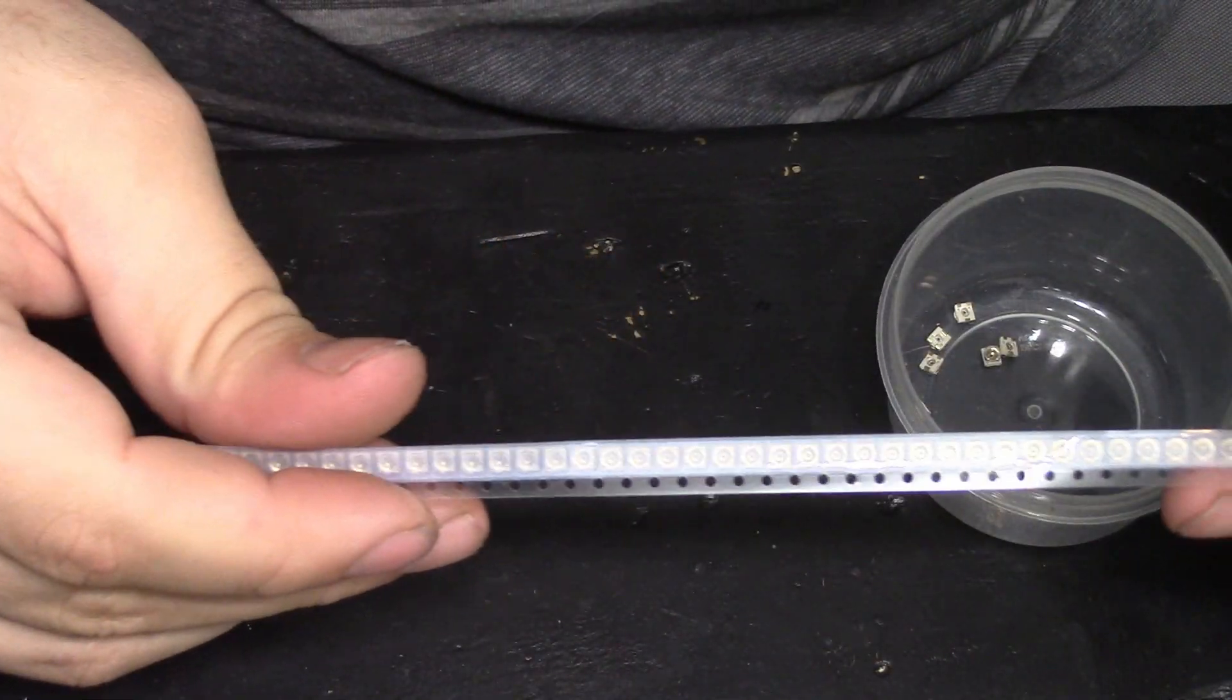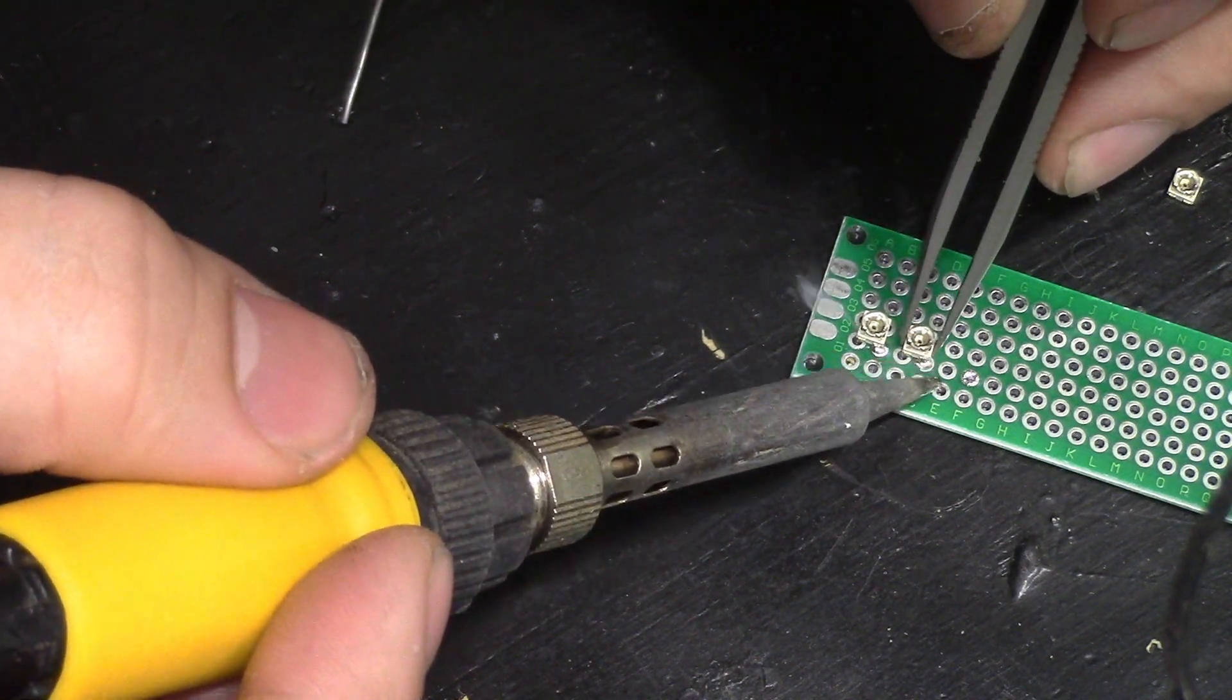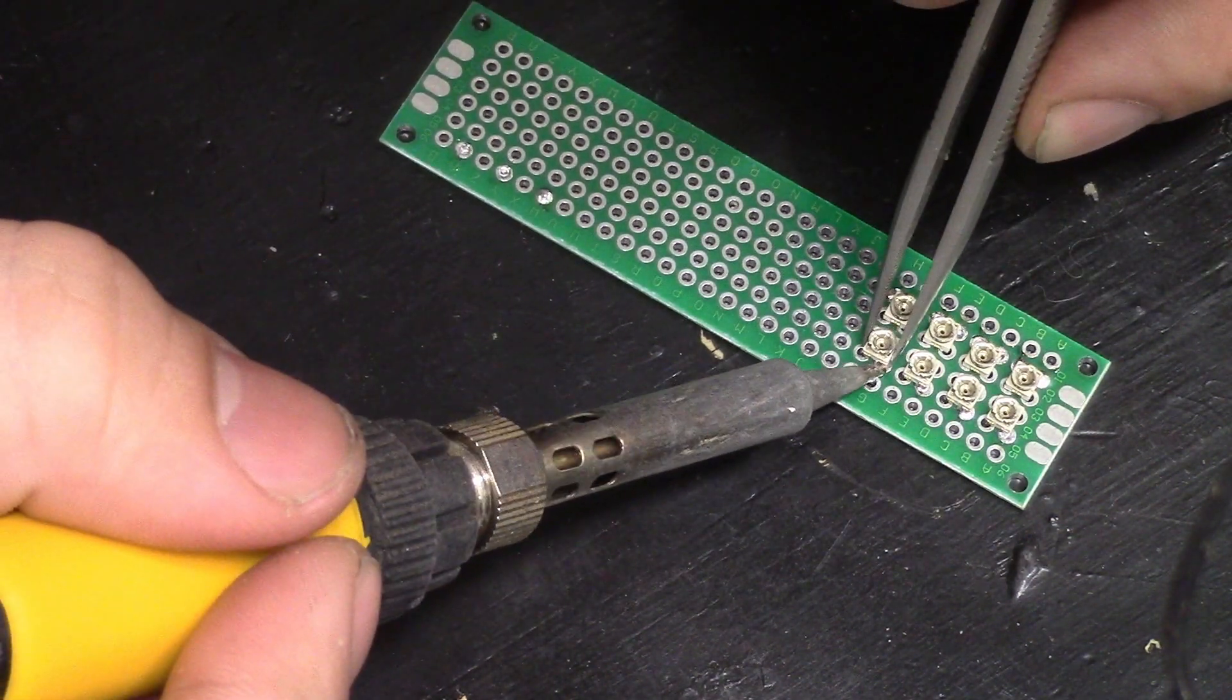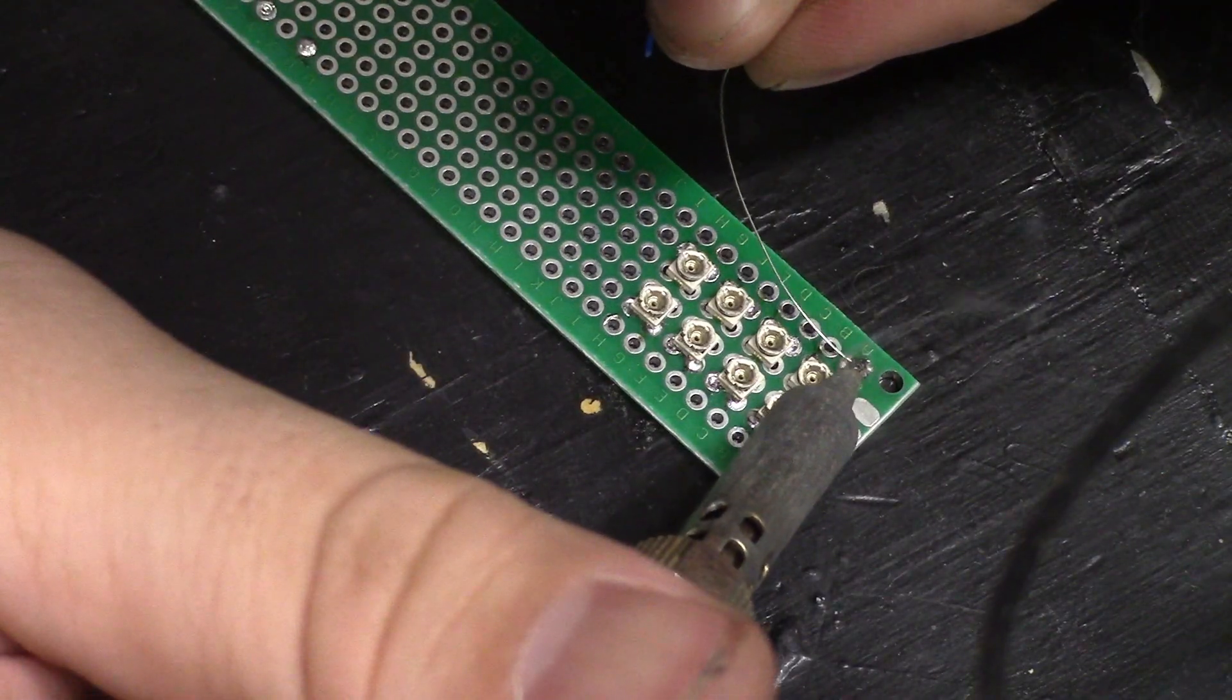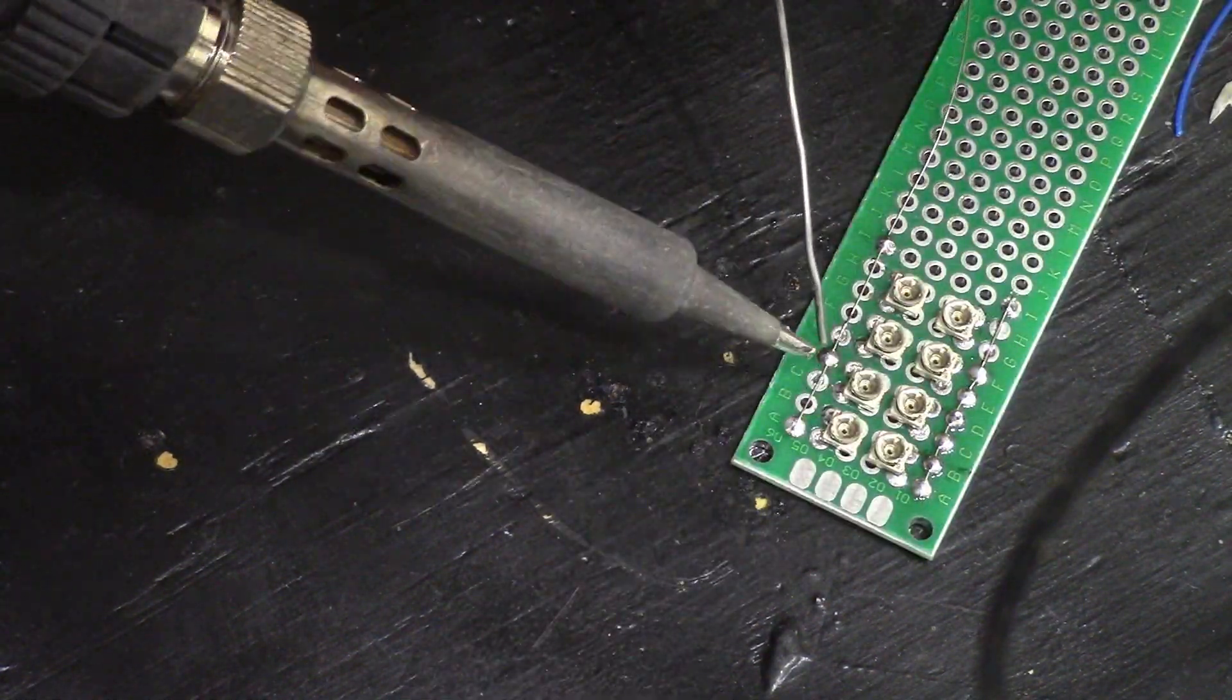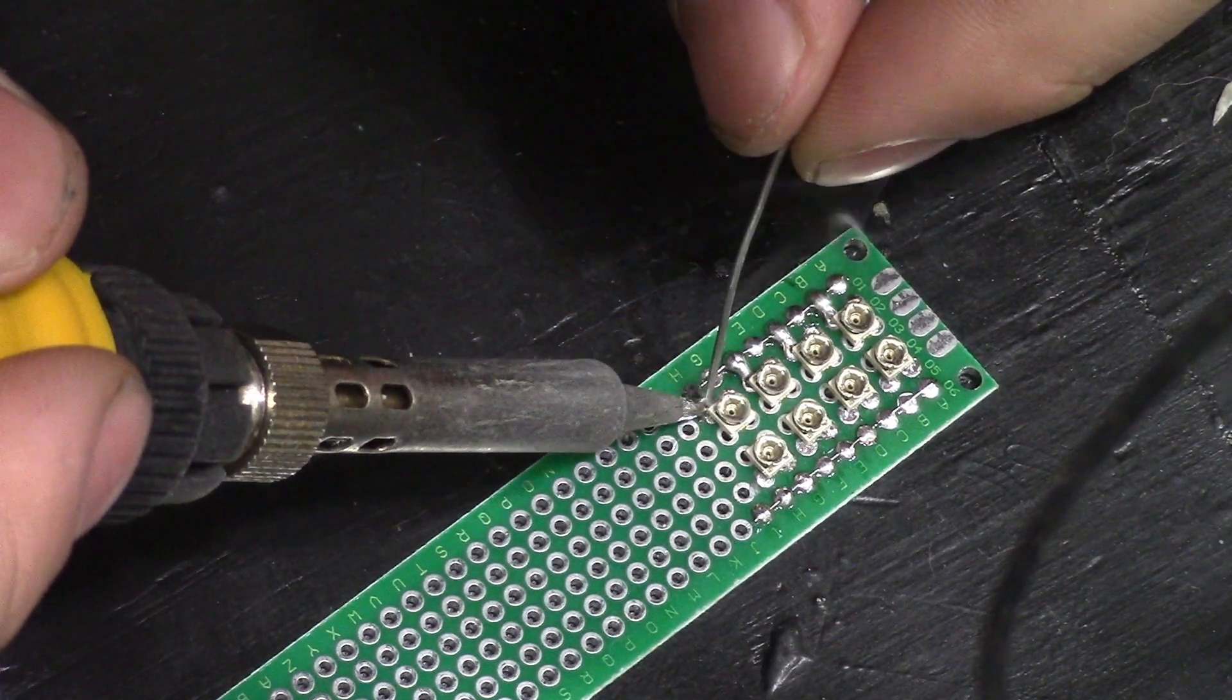Now that we know the circuit works, we can downsize it using surface mount parts to make it easy to install on the controller. Surface mount parts can be soldered on through-hole boards such as this one, but it takes a little bit of patience. Let me know in the comments below if you'd like to see this board as a kit in the future.